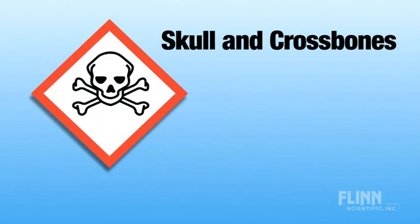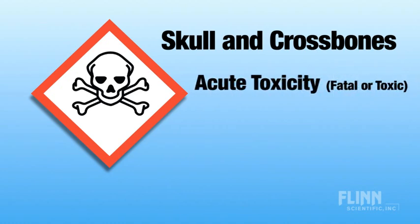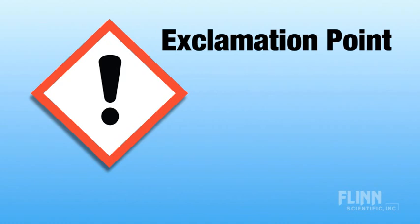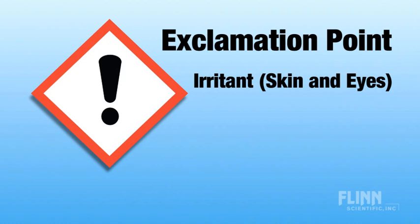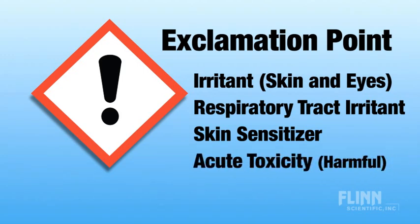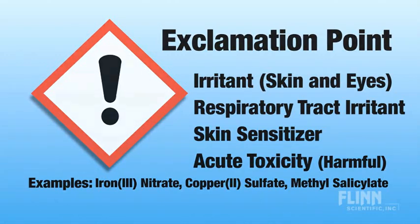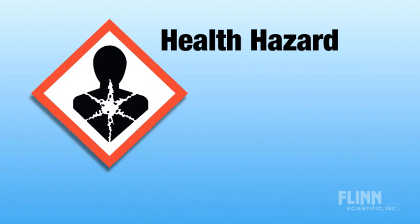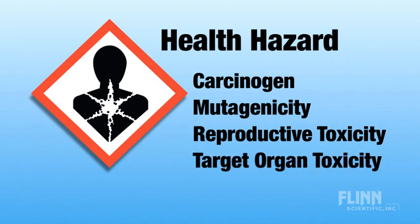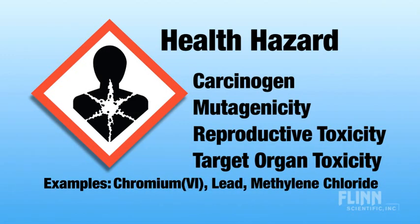A skull and crossbones pictogram is used for substances that are acutely toxic — that is, fatal or toxic if swallowed. An example would be phosphoric acid. The exclamation point pictogram is used for any substance classified as an irritant — either a skin and eye irritant or a respiratory tract irritant. It's also used for skin sensitizers, allergens, and those that have toxicity values classified as harmful if swallowed. An example of a chemical requiring the exclamation point is iron 3 nitrate. Finally, the health hazard pictogram is used for any substance classified as either a known, possible, or probable carcinogen, things that have mutagenic properties, are reproductive hazards, or have specific target organ toxicity. Examples include all chromium 6 compounds, lead compounds, and methylene chloride.